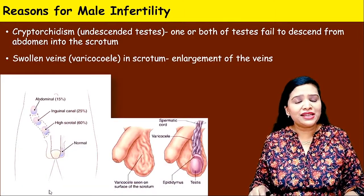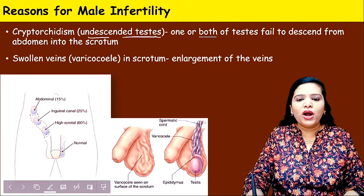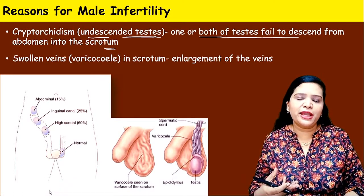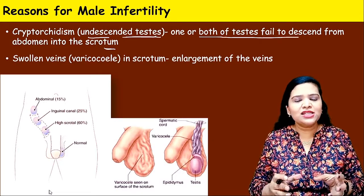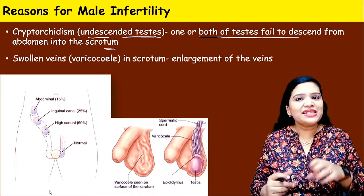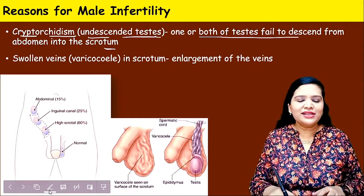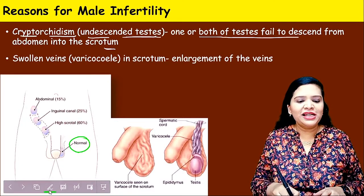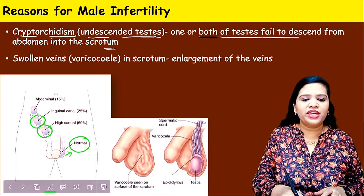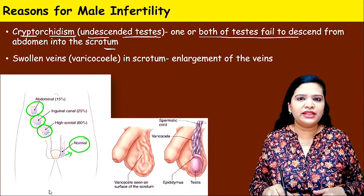Now let us see the reasons for male infertility. The first one is undescended testis — one or both testes fail to descend from the abdomen into the scrotum during embryo development. This condition is called cryptorchidism. A normal testis is present inside the scrotum, but for some people the testis may remain in the abdominal region. This may lead to infertility in males.